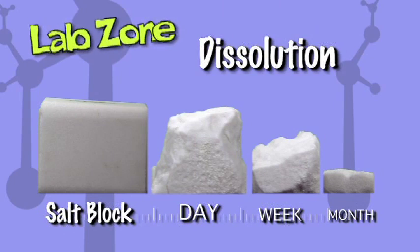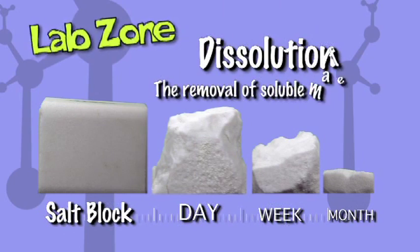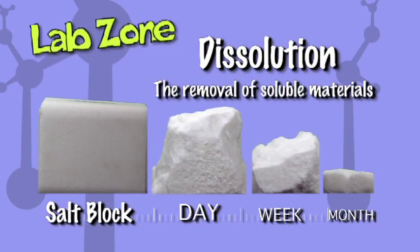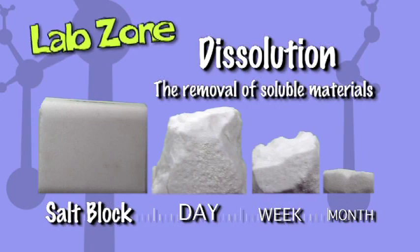We can see that over time the water dissolved the salt blocks and made them smaller and smaller. Dissolution can be looked at as the removal of soluble materials. And removing solids in karst makes passages for water to travel through.